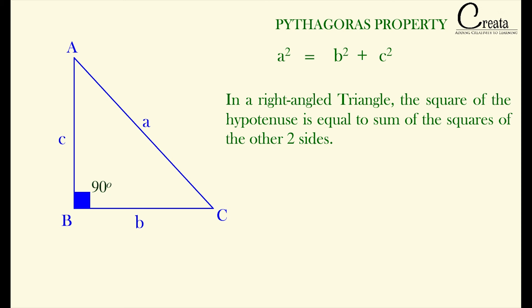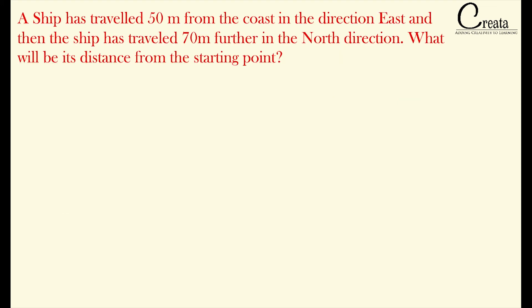Let's take an example to further understand the concept. A ship has traveled 50 meters from the coast in the east direction, and then traveled 70 meters further in the north direction. What will be its distance from the starting point?